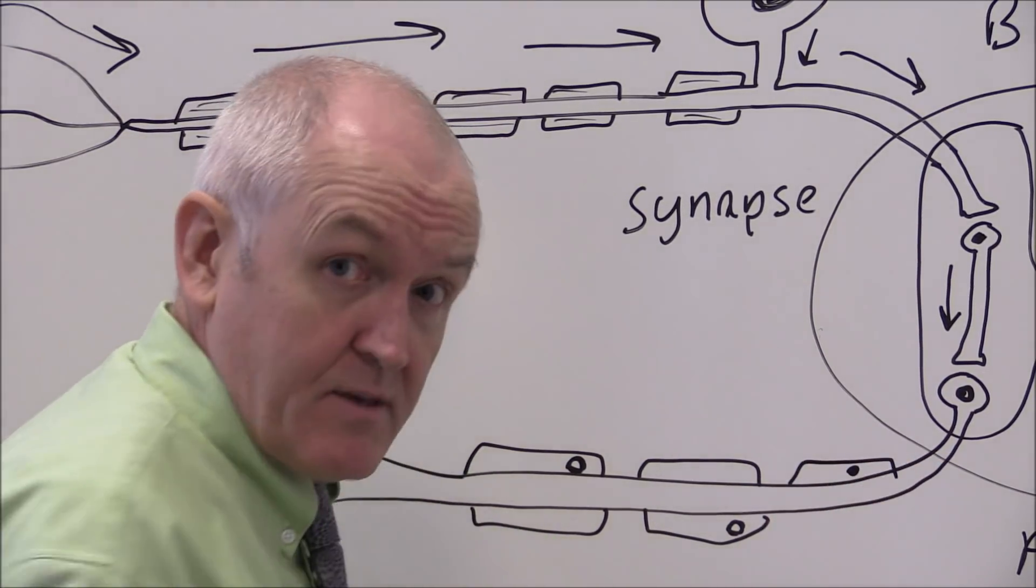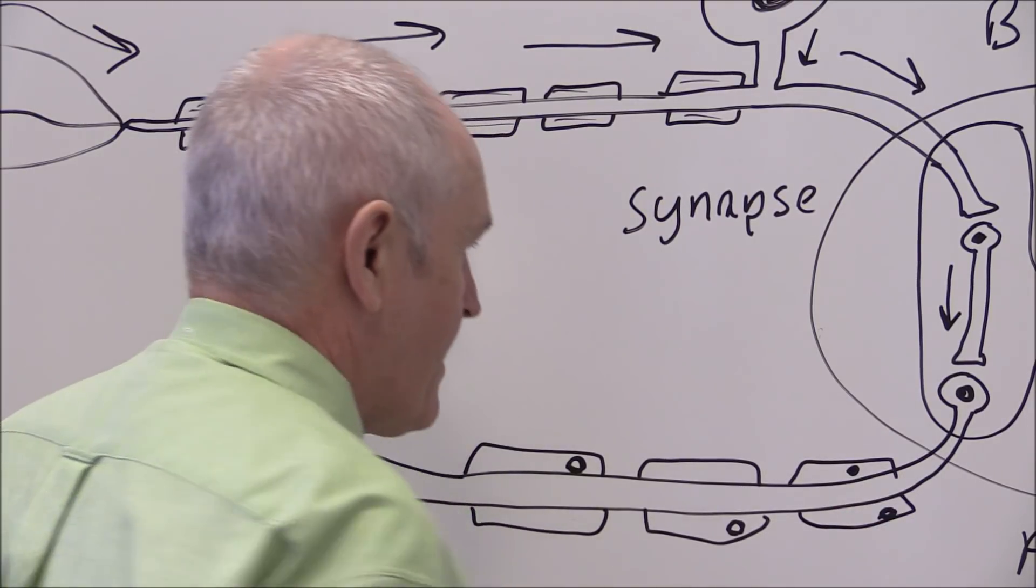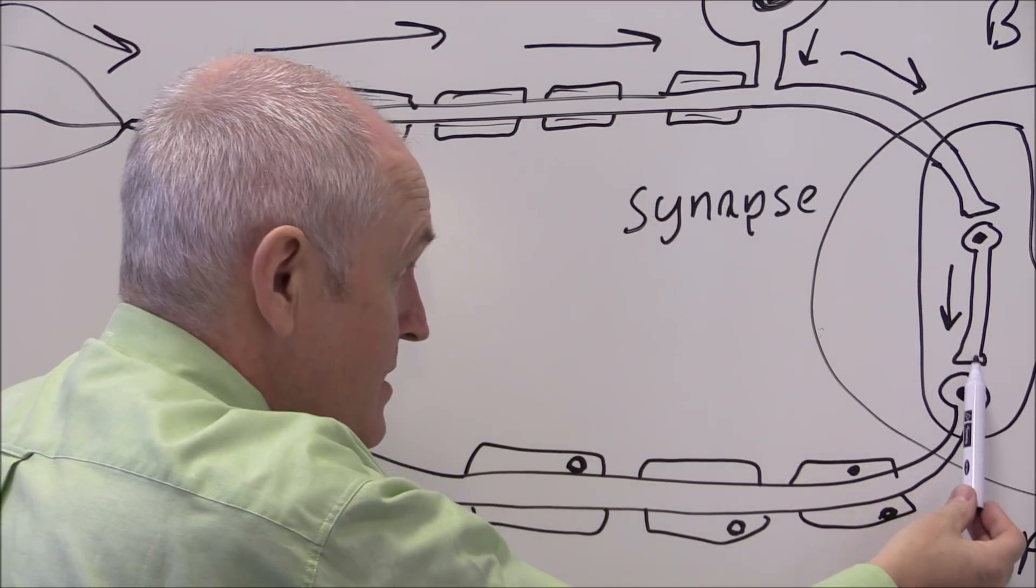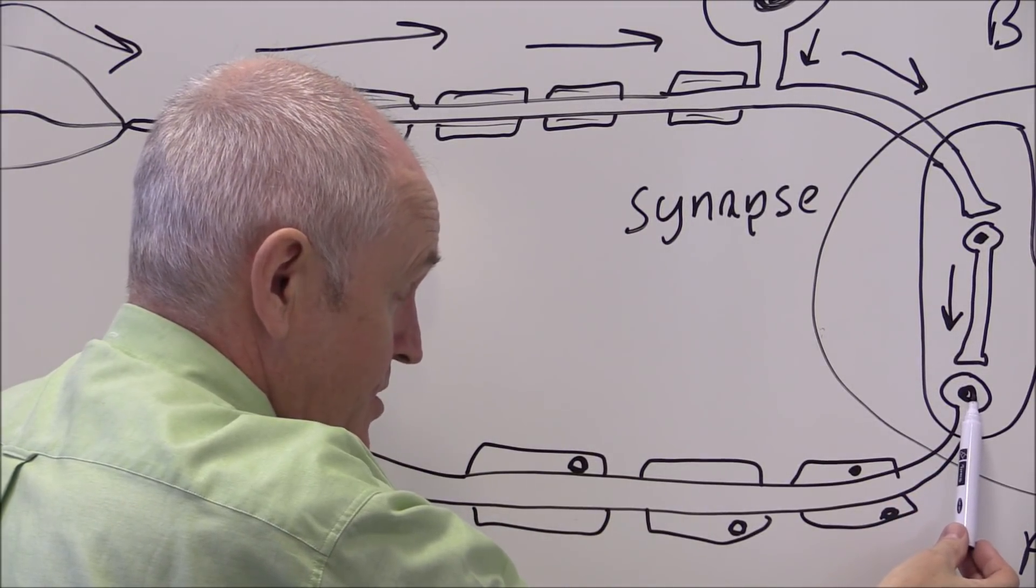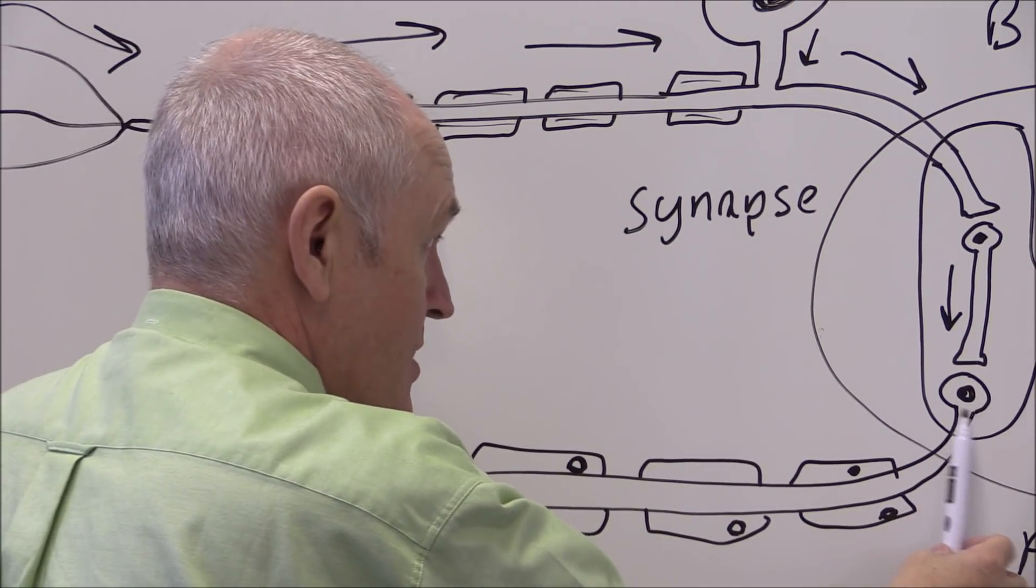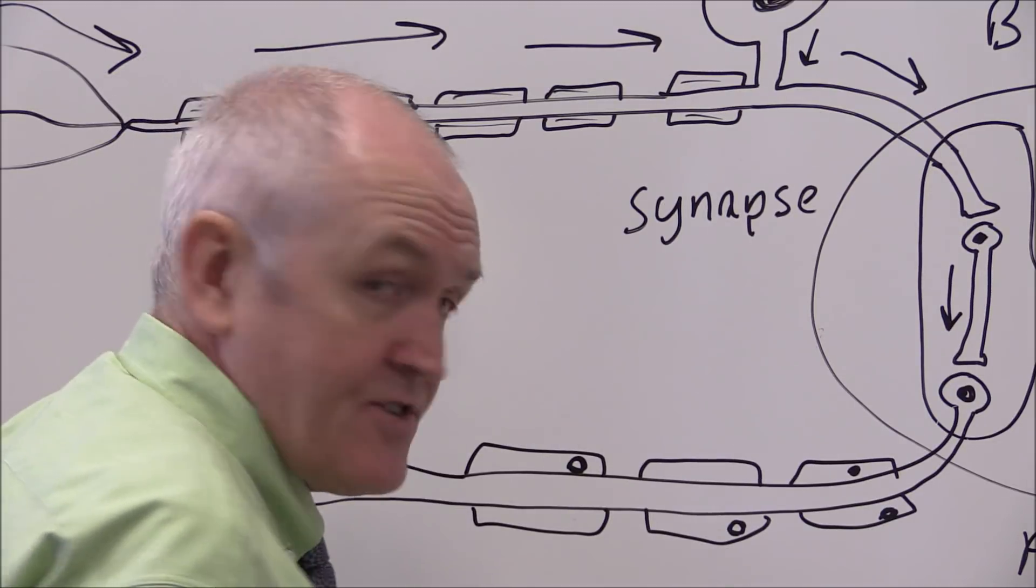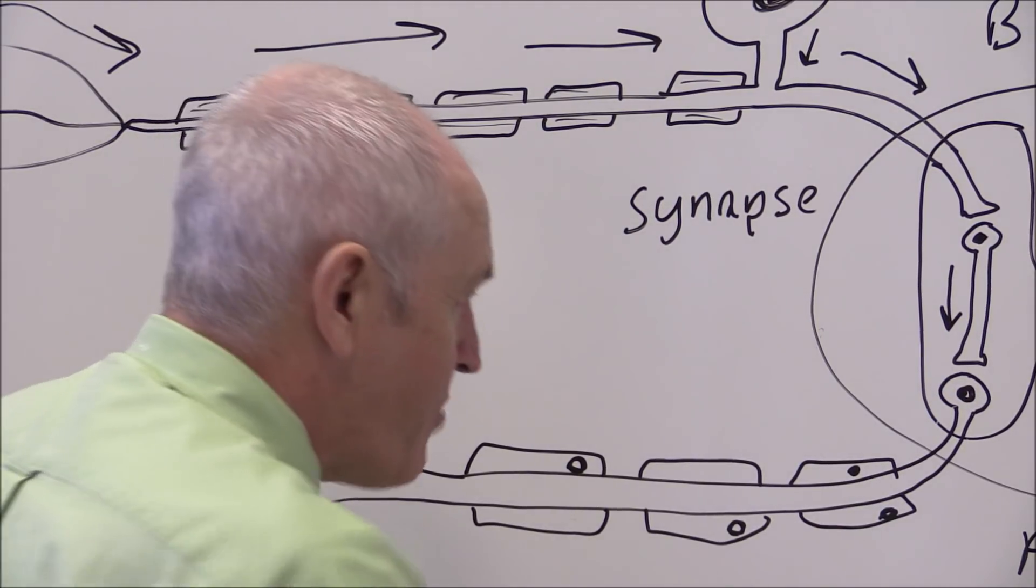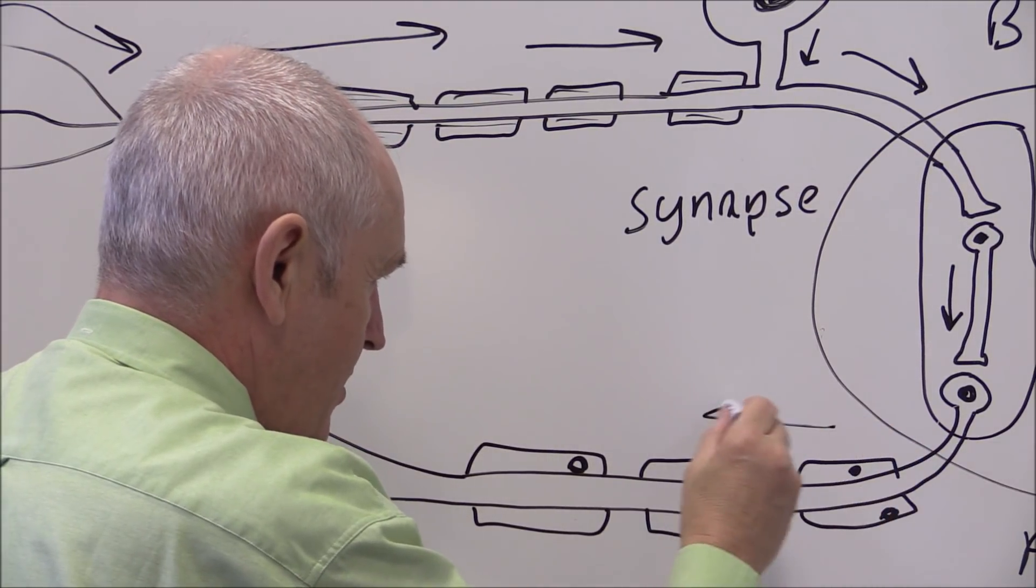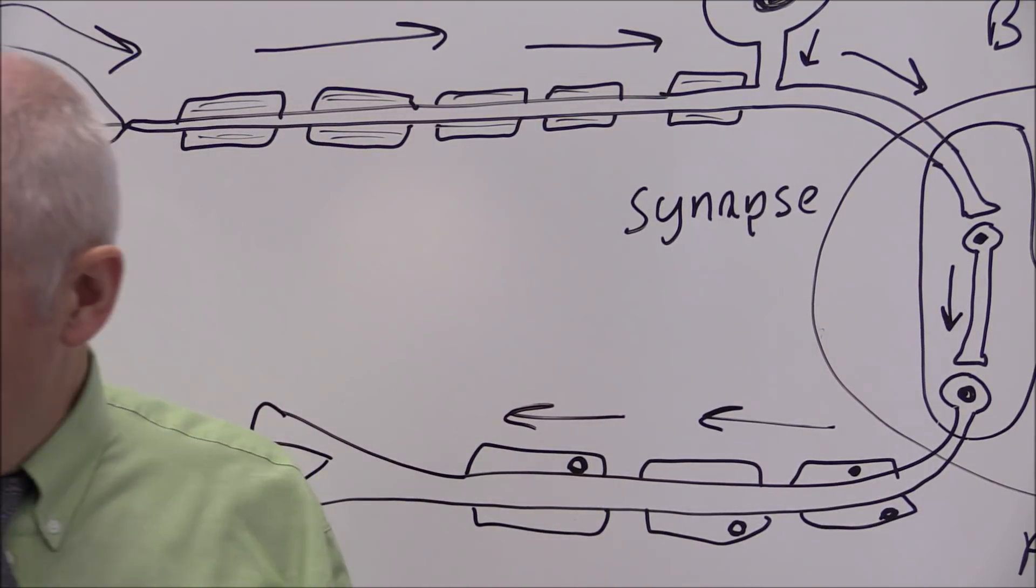Transmission rates could be up around 100 meters per second. So from the relay neuron or the interneuron synapsing across to the cell body of the motor neuron, that causes the motor neuron to develop or to generate a new neuronal electrical impulse. It depolarizes the cell body and that impulse then travels out along the axon of the motor neuron.